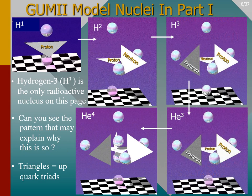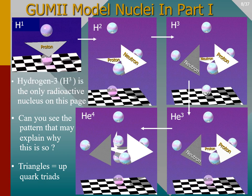In the remainder of part one, this new 3D GUMMI model will be used to look at five separate intranuclear structures for hydrogen and helium atoms. One of the five structures shown is radioactive. Can you see the pattern or zone that makes it different?